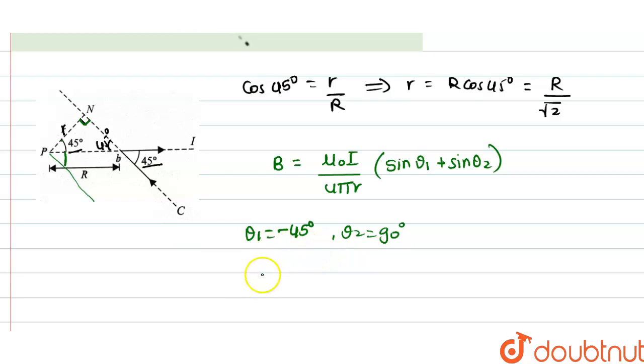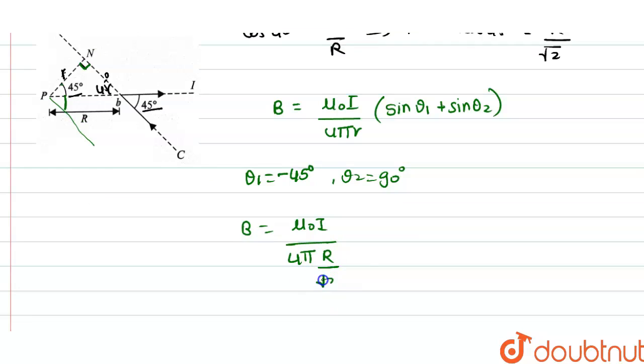So if we substitute values, B will be equal to mu naught i divided by 4 pi, value of r is capital R divided by root 2, into sine of theta 1 is